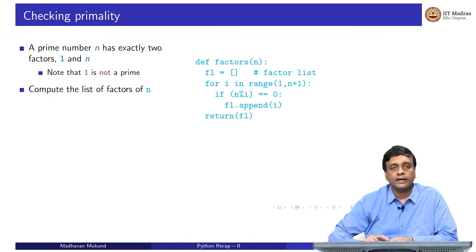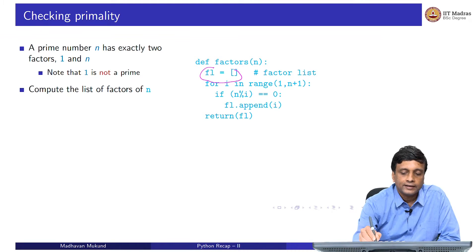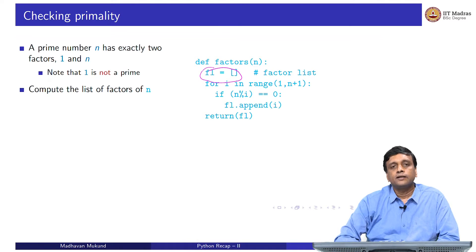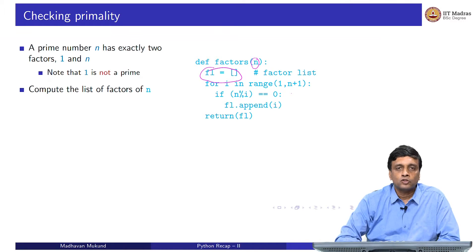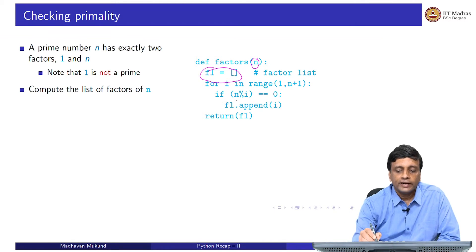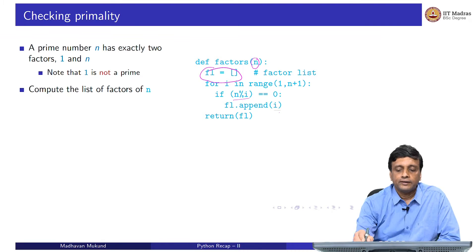Here we do not have two numbers, we only have one number. So we define a factor list, initialized to empty so that Python knows it is a list. We run from 1 to n+1 because we want n also to be in our loop — trying all numbers 1, 2, 3, 4 up to n. Whenever we find a number i where the remainder of n divided by i is 0, we append it to the list.